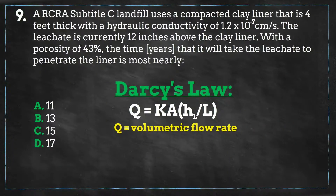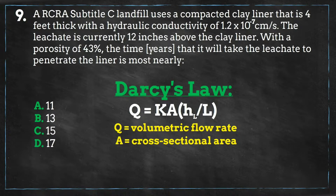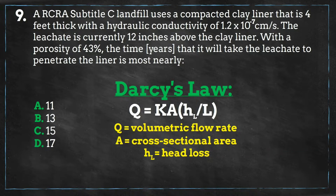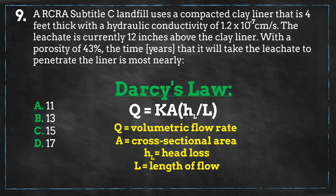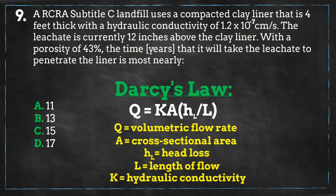Where Q is the flow rate of liquid through a porous medium, A is the cross-sectional area perpendicular to flow, HL is the head loss over a horizontal length L in the direction of flow, dH/dL is the hydraulic gradient — the change in height per unit length in the direction of flow of an aquifer — and K is the hydraulic conductivity.